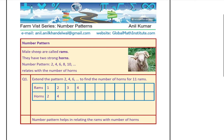Here's the very first thing based on our number pattern. Male sheep is called Ram. They have two horns. So if we start counting the horns of a male sheep, the numbers will go something like this: two, four, six, eight, ten — the even numbers. So we'll get these even numbers.